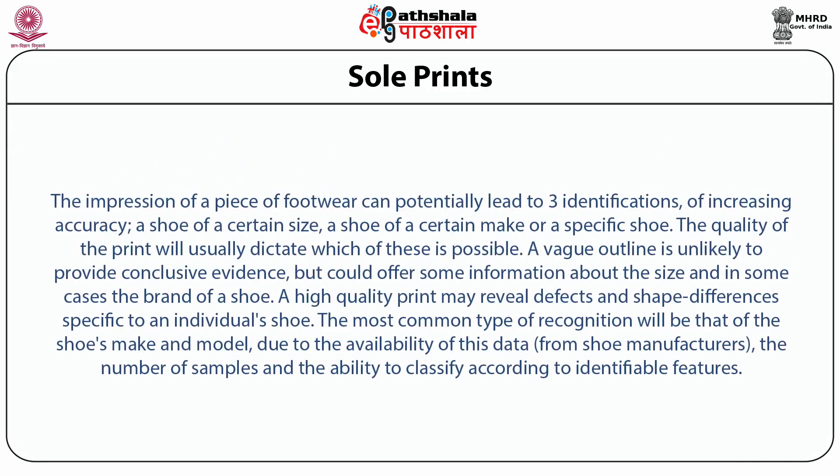The impression of a piece of footwear can potentially lead to three identifications of increasing accuracy: a shoe of a certain size, a shoe of a certain make, or a specific shoe. The quality of the print will usually dictate which of these is possible. A vague outline is unlikely to provide conclusive evidence but could offer some information about size and in some cases the brand of a shoe. A high-quality print may reveal defects and shape differences specific to an individual shoe. The most common type of recognition will be that of the shoe's make and model due to the availability of data from shoe manufacturers and the ability to classify according to identified features.